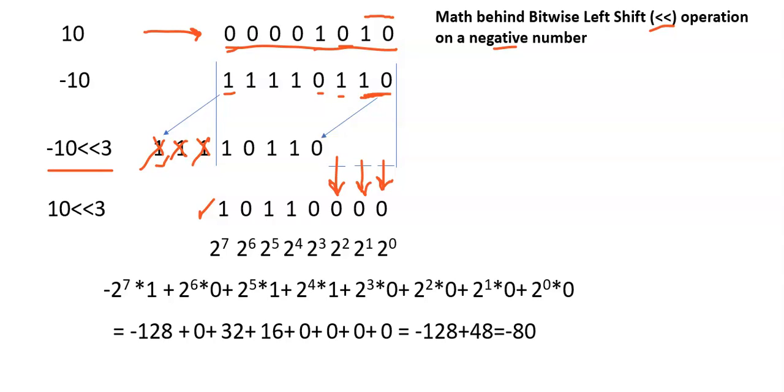Now we find out value of this particular one. As we have done in the previous case, as there is 1 in the sign bit, that means now this value becomes a negative number.